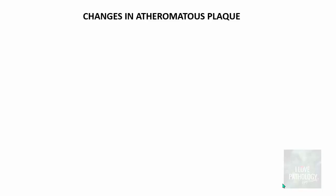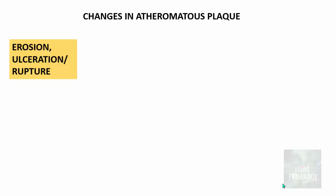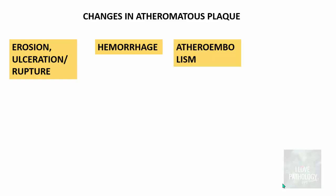Having understood the histology, let us see what changes can occur in an atheromatous plaque. The changes can be in the form of erosion, ulceration, or even rupture. The plaque can undergo hemorrhage and then atheroembolism, or it can cause aneurysm. These changes within the atheromatous plaque can lead to further complications.